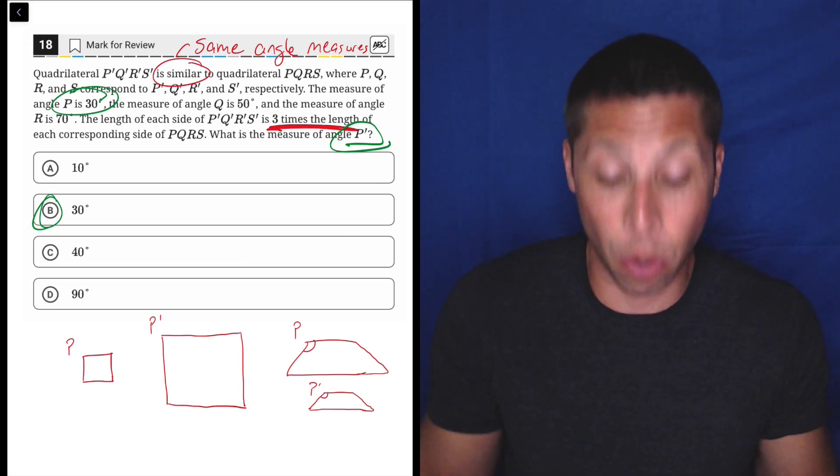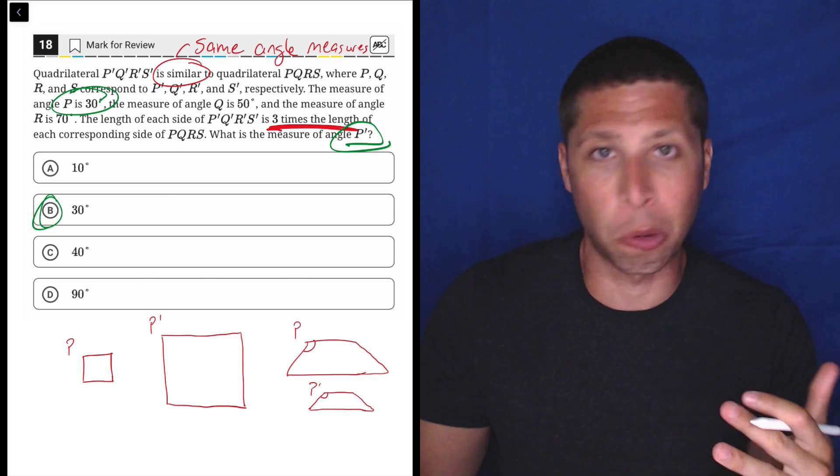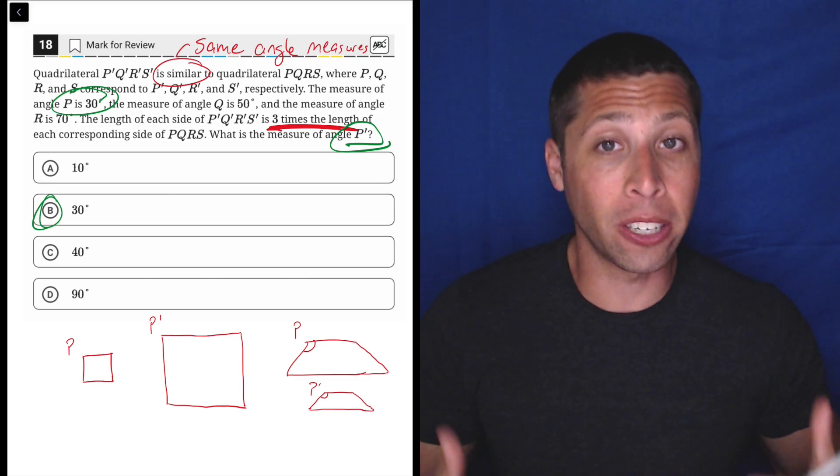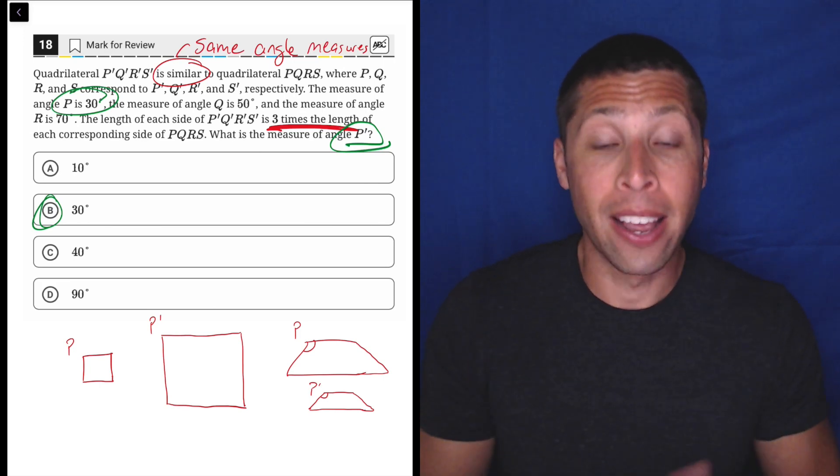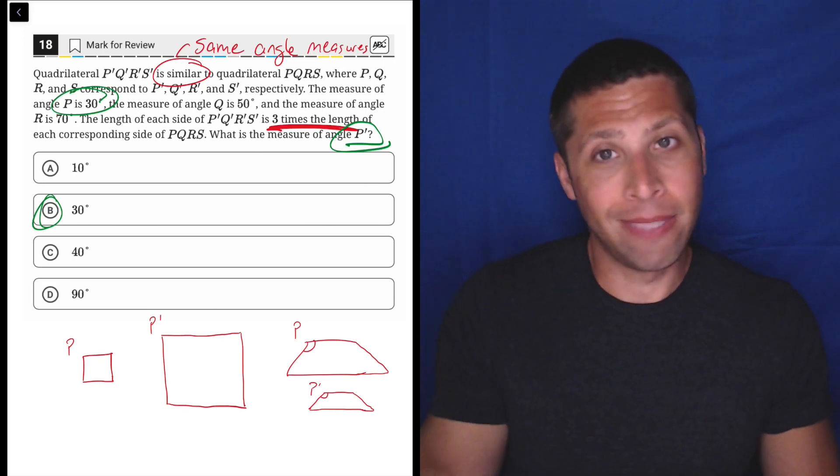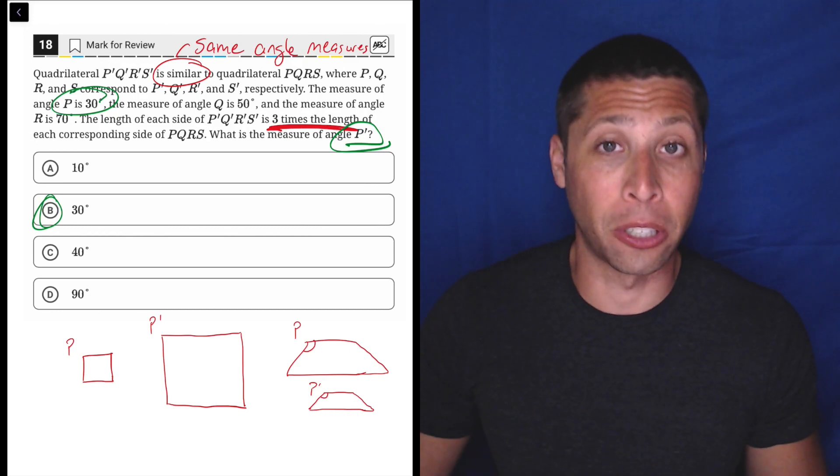That's it. That's the whole question. So notice, we're at number 18 in our 22. We're nearing the end of this section. This is a hard module. It's supposed to be a hard question, but it's not hard because of the math. It's hard because of the way it's worded. Get over that and you can easily get these 10 points within just a few seconds by recognizing what similar shapes mean.